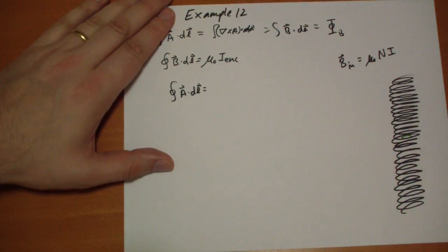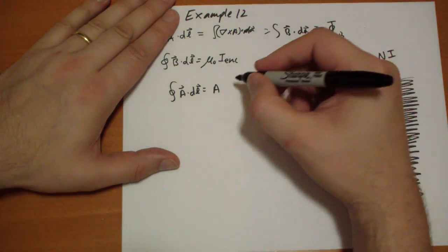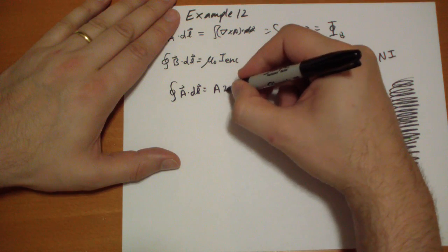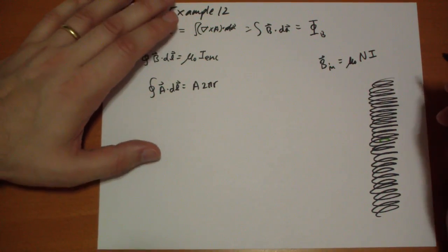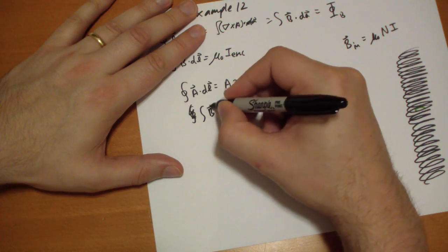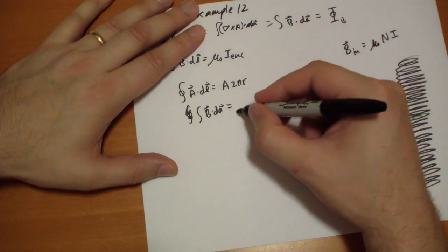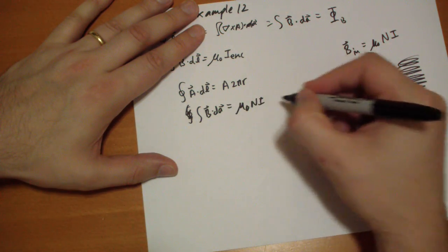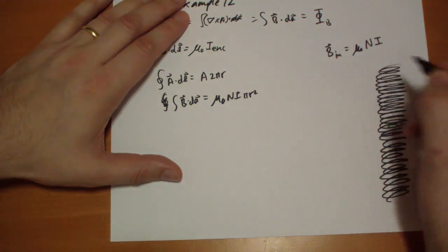That's the integral of A vector dot dL vector. Well, that's just going to be, since B is constant, A is going to be constant. So that's just A times the circumference, which is 2 pi r. Whatever radius we chose to use out there. And that's going to be equal to the magnetic flux, which is just basically a constant magnetic field. And what's the surface area? That's pi r squared.